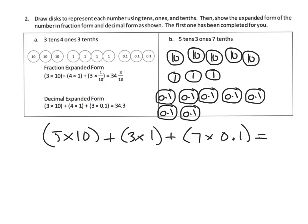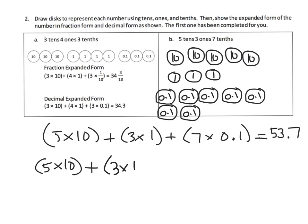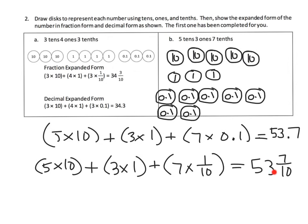That equals 50 plus 3 plus 0.7, so the decimal is 53.7. As a fraction form: five copies of ten, plus three copies of one, plus seven copies of one tenth, which equals 53 and seven tenths. Working in reverse, we want students to be able to see 53.7 and decompose it into its parts.